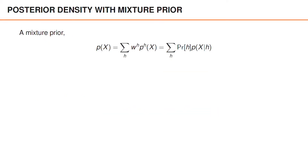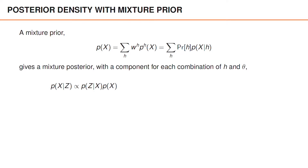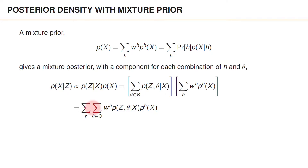Let's start by considering the posterior when we have a prior that is a mixture. We then get a mixture posterior, where we have a mixture component for each combination of prior hypothesis H and data association theta. If we input the expressions for the measurement and the prior, then we get a double sum over the prior hypothesis H and the data association theta. We have the weight of the prior hypothesis, the joint likelihood for the measurements and the data association, and the prior conditioned on the hypothesis H.